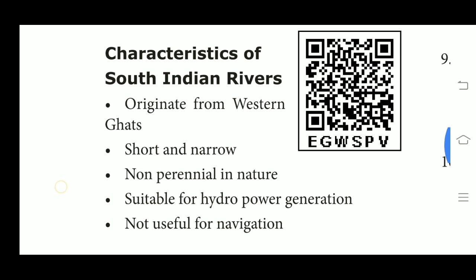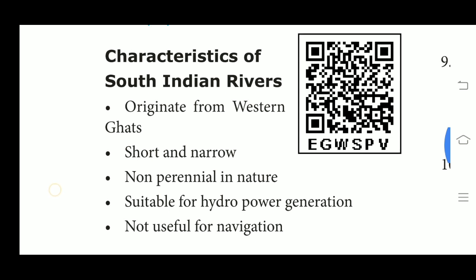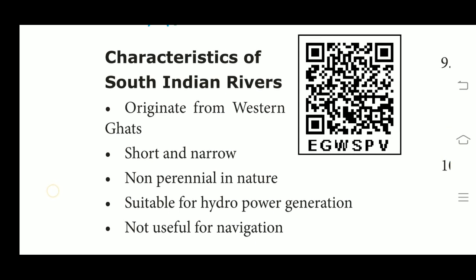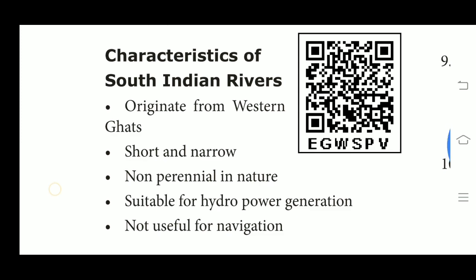Fourth, South Indian rivers are suitable for hydropower generation — they flow through a smooth surface and the flow of water is uniform, which is important for generating hydroelectric power. Therefore, South Indian rivers are preferred over North Indian rivers for this purpose. Fifth, the rivers of South India are not useful for navigation — they are navigable only in their delta regions.